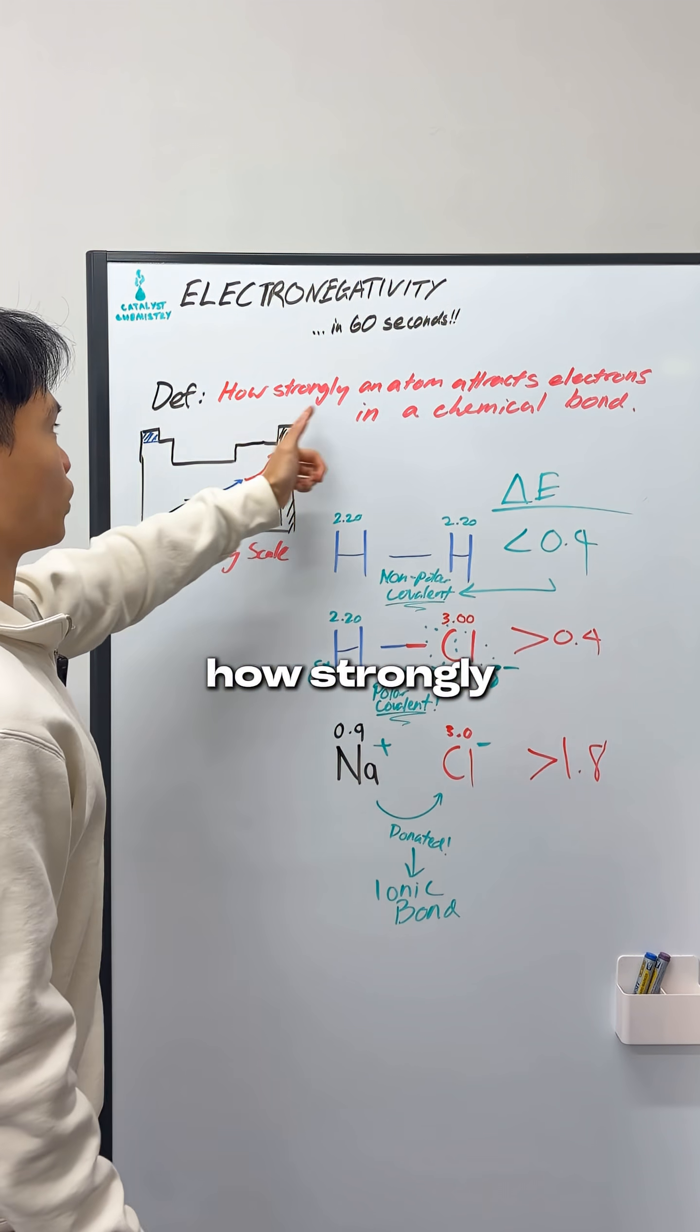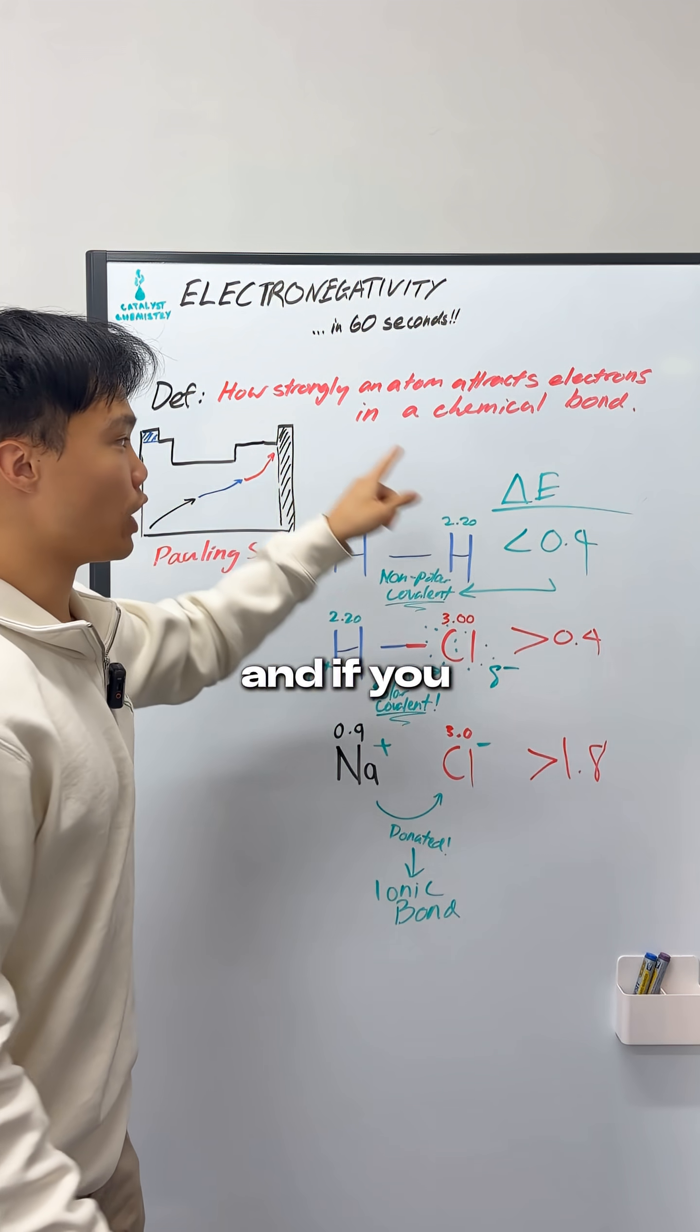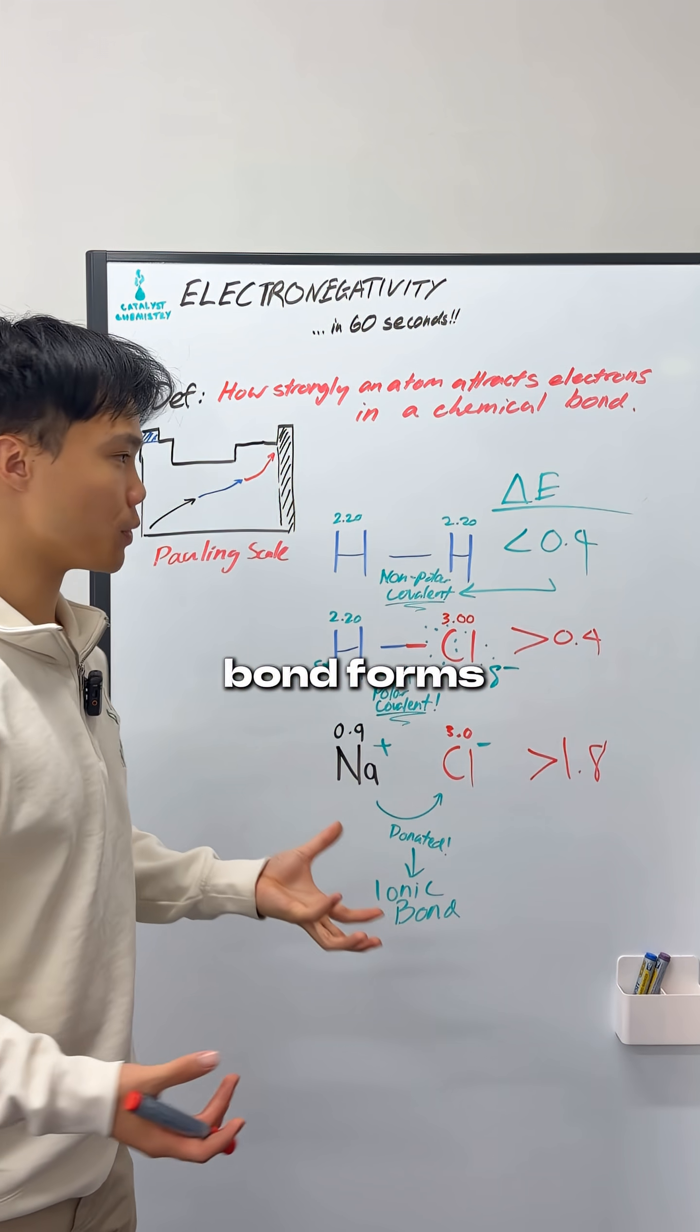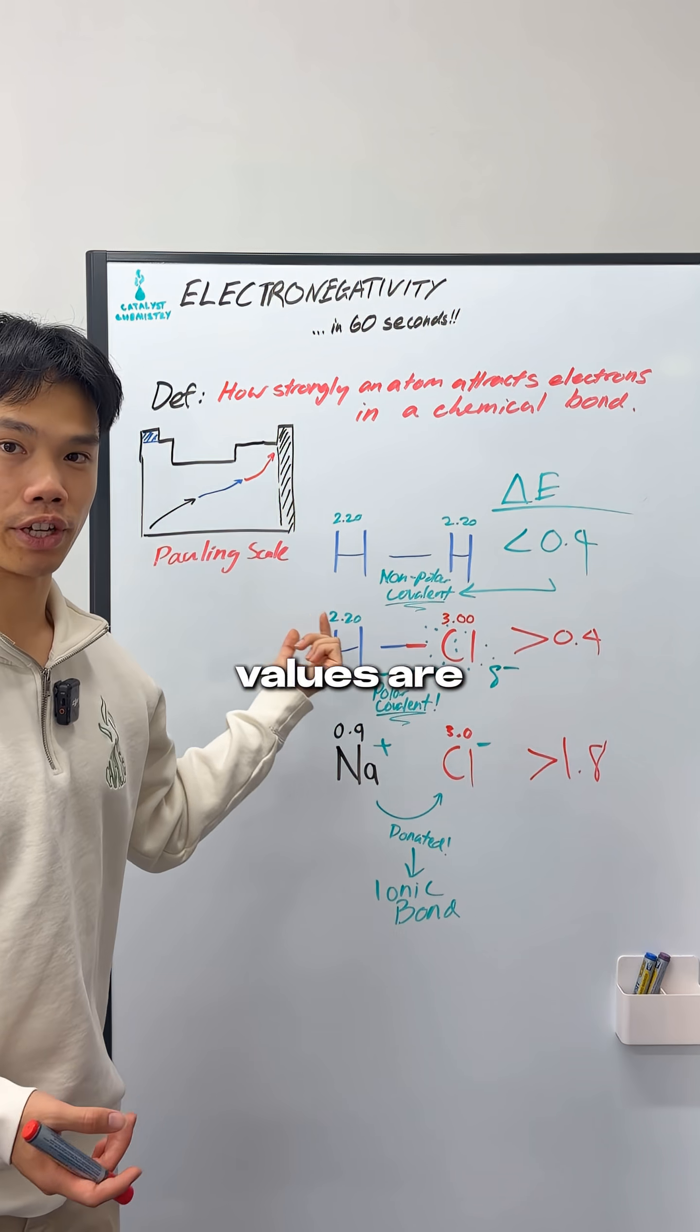So to summarize, electronegativity is how strongly an atom attracts electrons in a chemical bond. And if you understand these three cases, you will always know what bond forms as long as you know what the electronegativity values are.